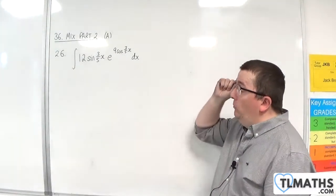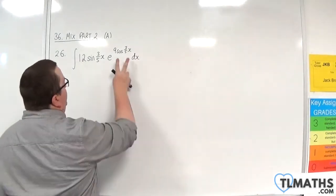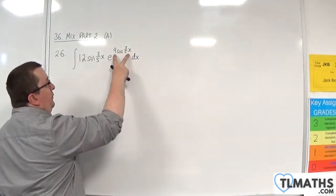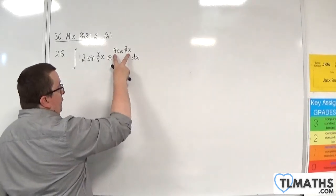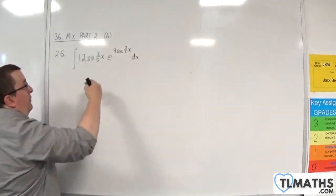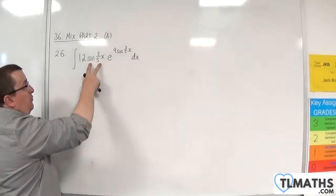And the reason why I know that's going to work is because the interior function, which is this 9 cosine 3/5 x, differentiates to something with sine of 3/5 x, which is what I've got up front.